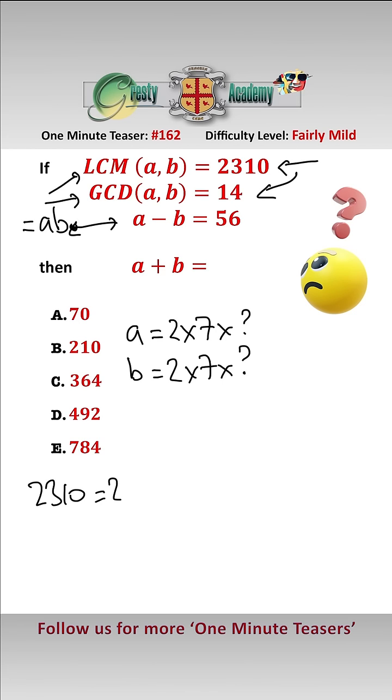2310 equals 2 times 3 times 5 times 7 times 11. And we have already taken account of the 2 and the 7 here as the GCD, so we know that these two here must be some combination of the 3, 5 and 11.